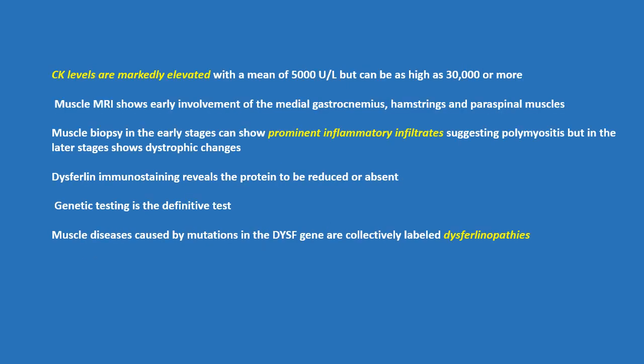CK levels are markedly elevated with a mean of 5,000 but can be as high as 30,000 or more. Muscle MRI shows early involvement of the medial gastrocnemius, hamstrings, and paraspinal muscles. Muscle biopsy in the early stages can show prominent inflammatory infiltrates suggesting polymyositis, but in the later stages shows dystrophic changes. Dysferlin immunostaining reveals the protein to be reduced or absent. Genetic testing is the definitive test.